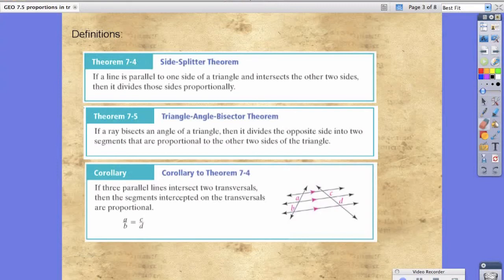So we'll look at what an example of that looks like in just a sec. Theorem 7.5 states that if a ray bisects an angle of a triangle, then it divides the opposite side into two segments that are proportional to the other two sides of the triangle.